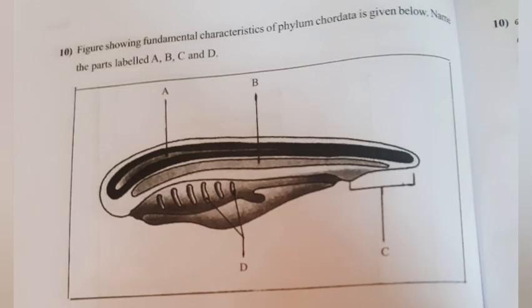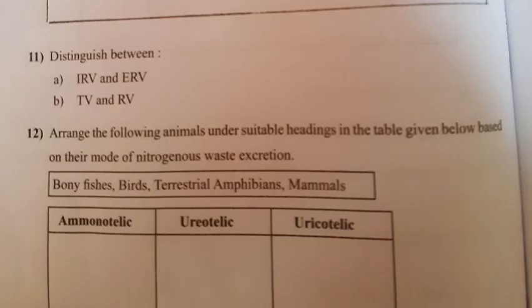Question 10: A figure showing fundamental characteristics of Phylum Chordata is given. Name the parts labelled A, B, C, and D. Answer: A. Nerve cord, B. Notochord, C. Post-anal tail, D. Gill slits.